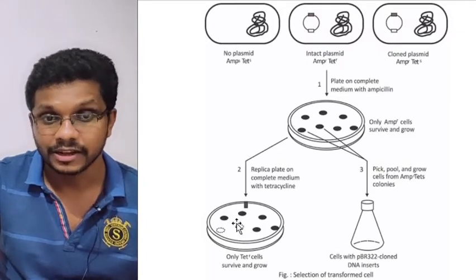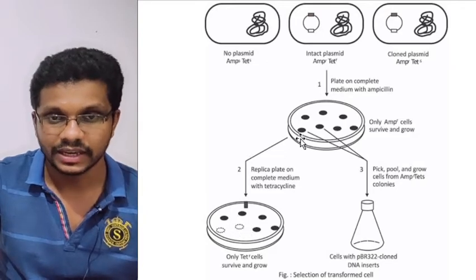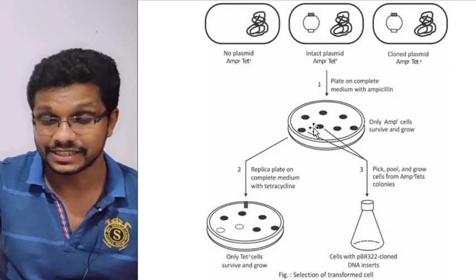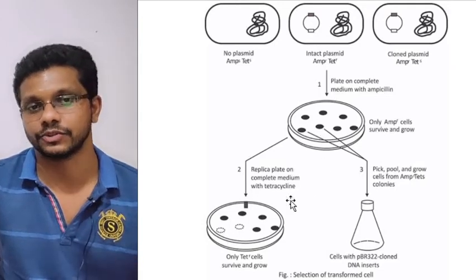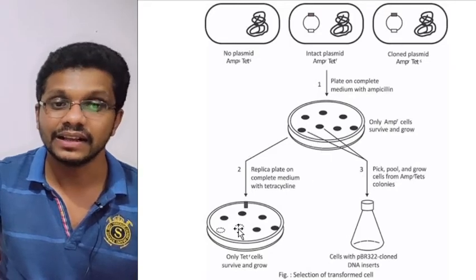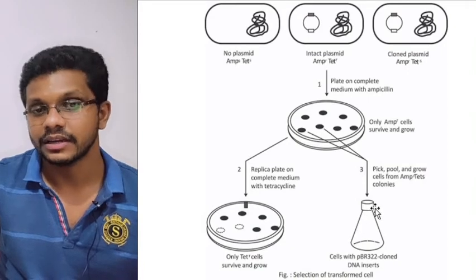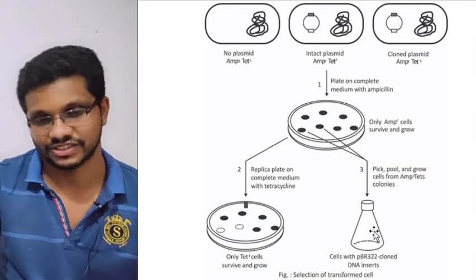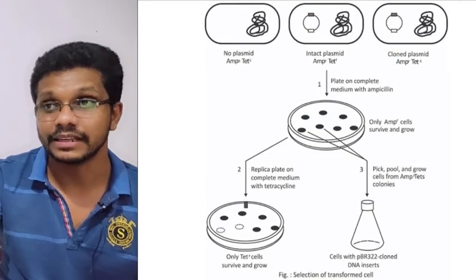You can see the dotted lines — these colonies are missing on the tetracycline plate but were present on the ampicillin plate. These cells are ampicillin-resistant but tetracycline-sensitive — that's what we are looking for. Once we identify the cells in the replica plate, those colonies will be isolated and transferred into a conical flask for further studies. That's how we select using PBR322 — it's a two-step process.